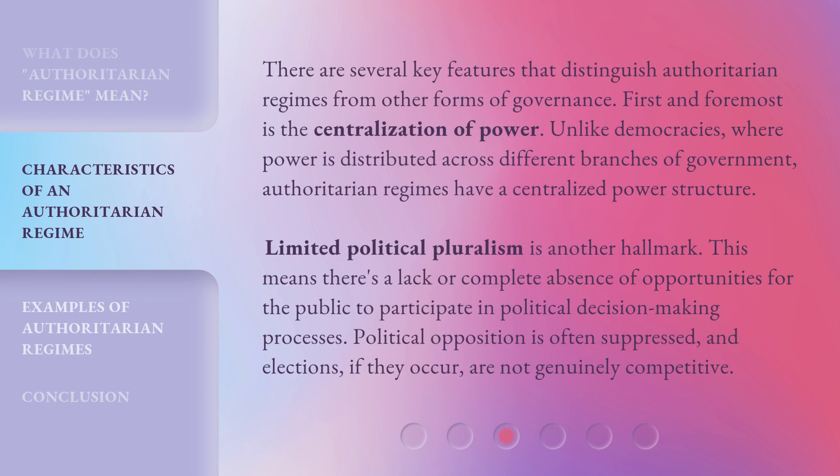There are several key features that distinguish authoritarian regimes from other forms of governance. First and foremost is the centralization of power. Unlike democracies, where power is distributed across different branches of government, authoritarian regimes have a centralized power structure. Limited political pluralism is another hallmark — there's a lack or complete absence of opportunities for the public to participate in political decision-making. Political opposition is often suppressed, and elections, if they occur, are not genuinely competitive.